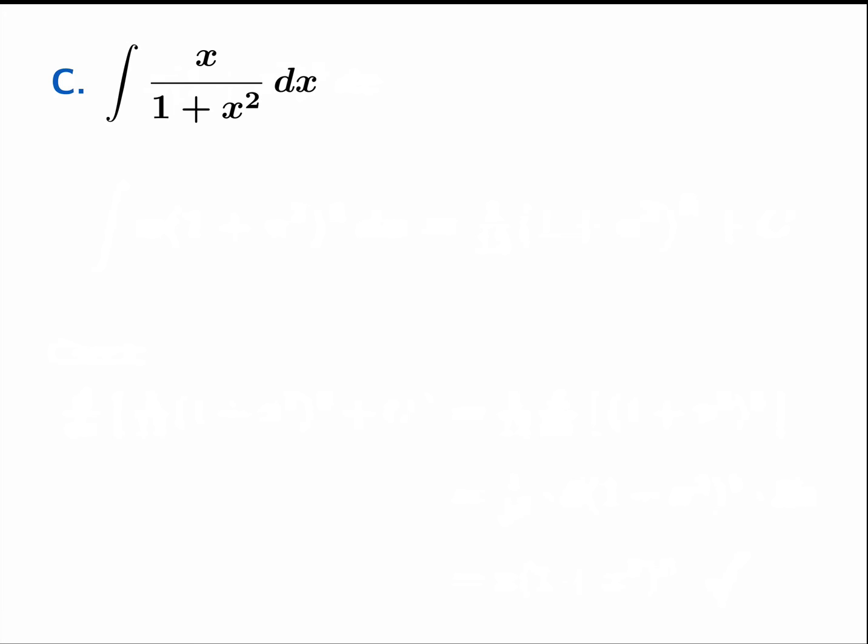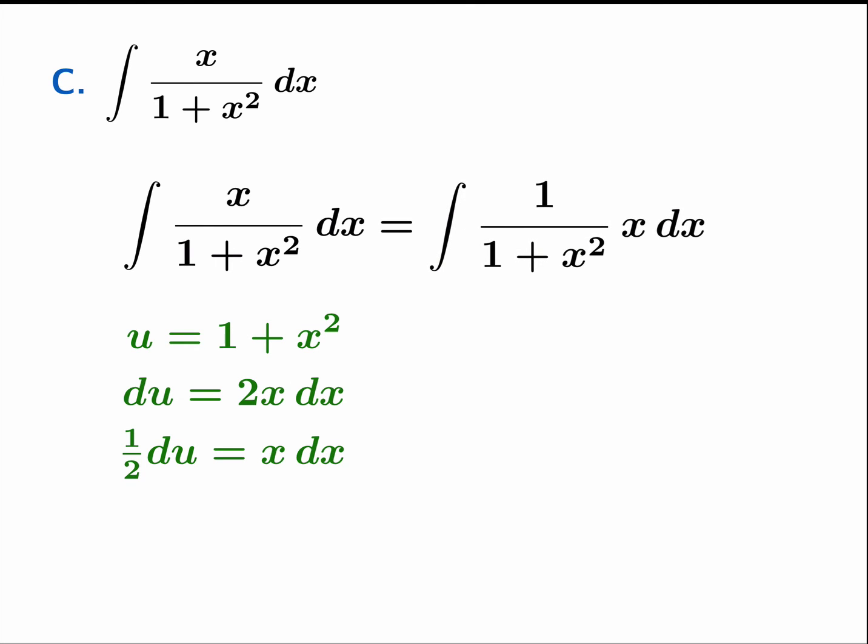Our final example is the antiderivative of this quotient x over 1 plus x squared. And in this example, we're going to use the same substitution we did in the last problem. We're going to let u be 1 plus x squared. And we'll notice that 1 half du is x dx. We'll rewrite the integral just a little bit to make the next step clear. We claim that this integral can be rewritten as 1 half the integral 1 over u du. So again, we're just going to make sure all the parts fit together. So 1 over 1 plus x squared can be rewritten as 1 over u. And x dx can be rewritten as 1 half du.